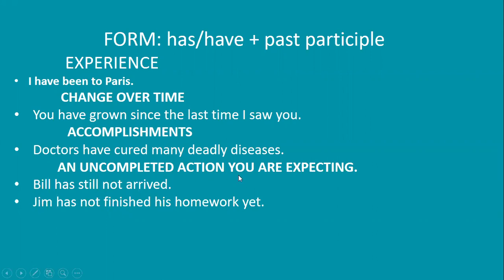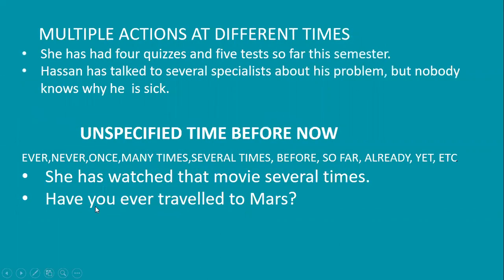For an uncompleted action you are expecting, the present perfect suggests we are still waiting for the action to happen. Examples: 'Bill has still not arrived,' 'Jim has not finished his homework yet.' For multiple actions at different times: 'She has had four quizzes and five tests so far this semester.' 'Hassan has talked to several specialists about his problem, but nobody knows why he is sick' — present perfect suggests the process is not complete and more actions are possible.